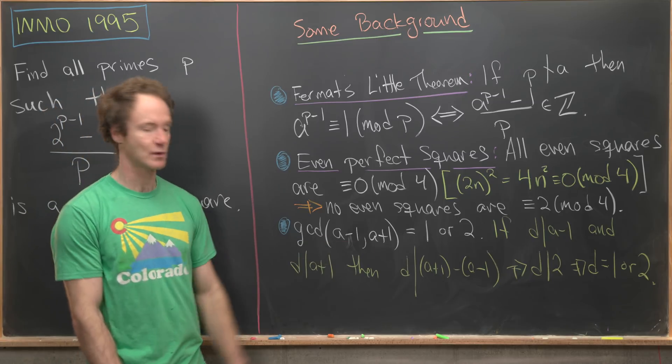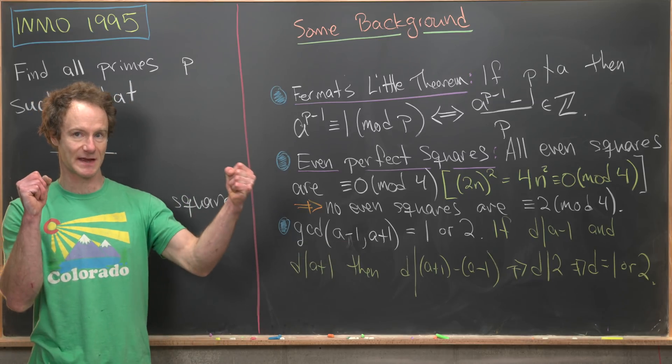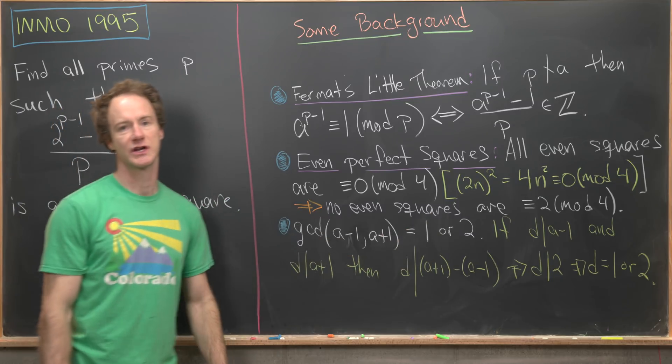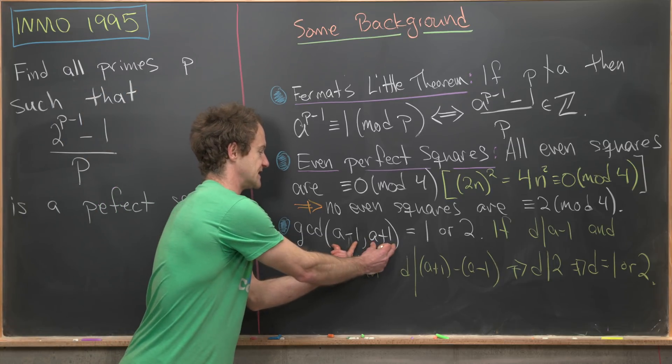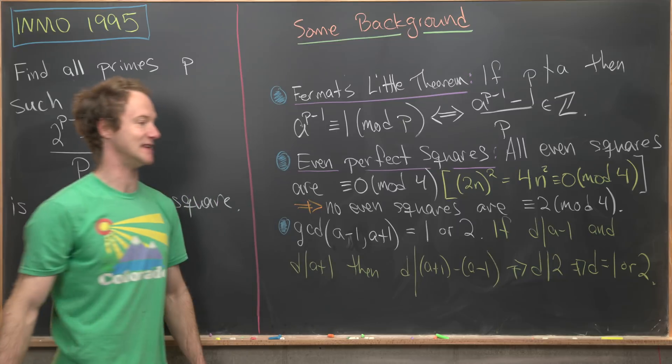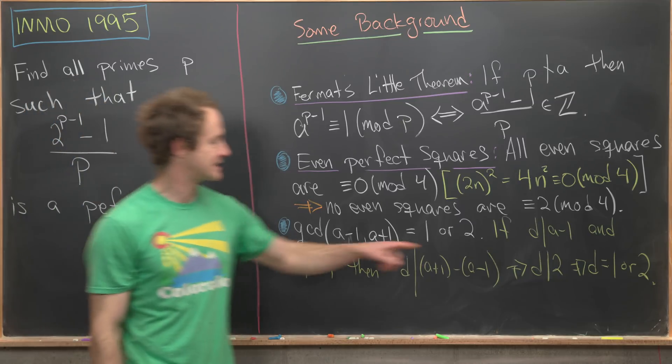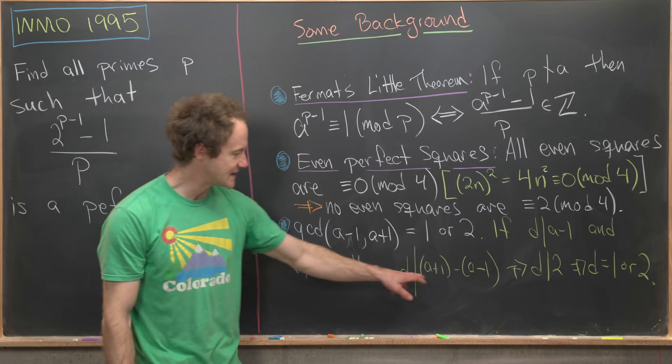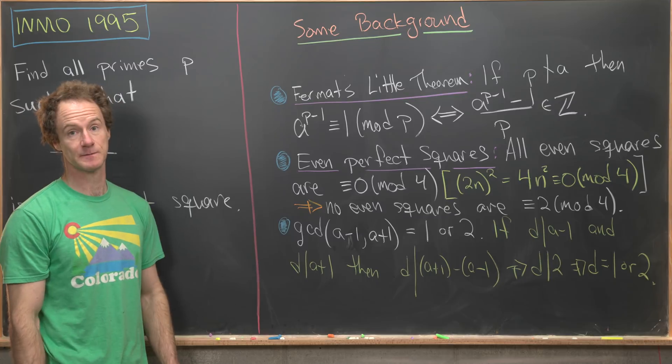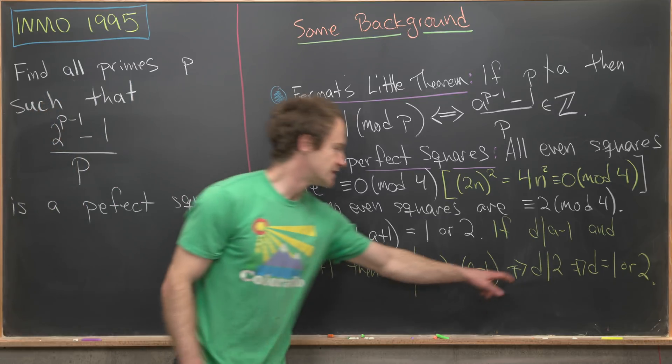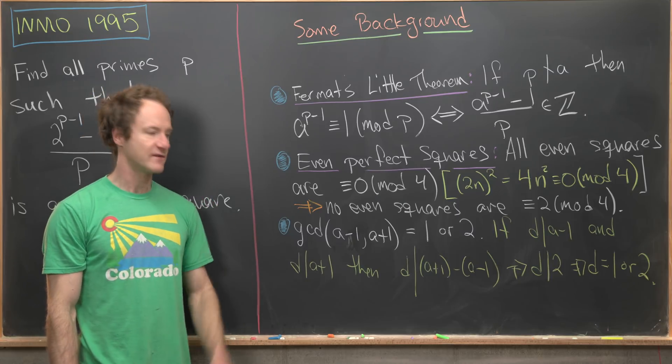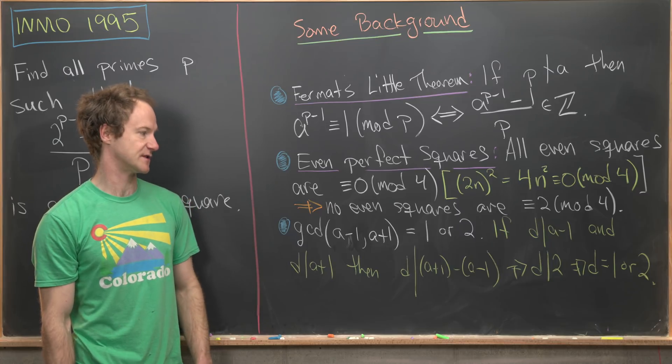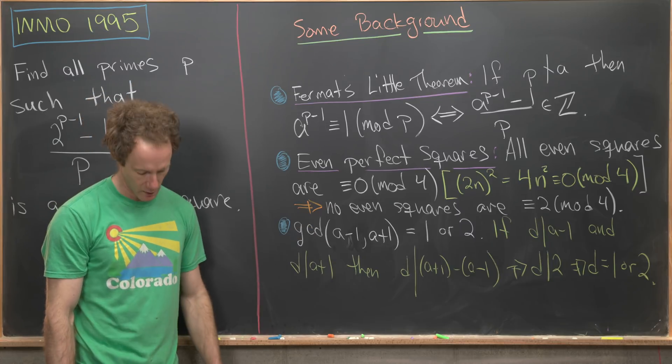Then finally, if you've got two numbers, a-1 and a+1, or really any two numbers that are separated by 2, their greatest common divisor is either 1 or 2. It's 1 if each of these is odd and it's 2 if each of these is even. That's because if d divides a-1 and d divides a+1, then d divides their difference, but their difference is exactly 2. So in other words, d divides 2, but the only divisors of 2 are 1 or 2. So that means our GCD has to be 1 or 2.